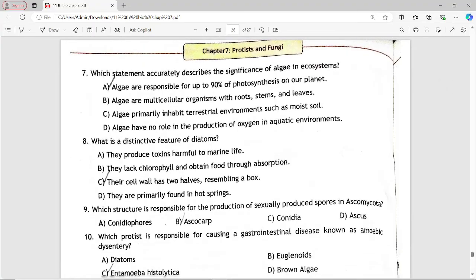Next MCQ: Which statement accurately describes the significance of algae in ecosystems? Options are: algae are responsible for up to 90% of photosynthesis on our planet; algae are multicellular organisms with roots, stems, and leaves; algae primarily inhabit terrestrial environments such as moist soil; algae have no role in production of oxygen in aquatic environments. Answer is option A: they are responsible for up to 90% of photosynthesis on our planet.